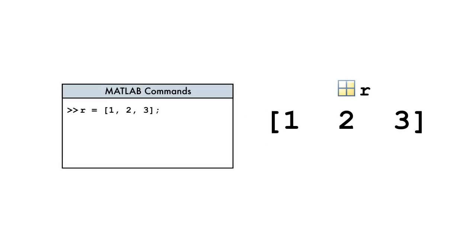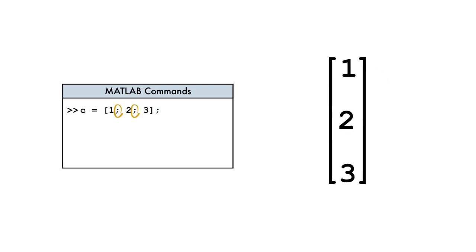But how do we create a matrix in MATLAB? Remember that we used commas to create row vectors, and semicolons to make column vectors. Since matrices contain both rows and columns, we'll borrow a little from each method.